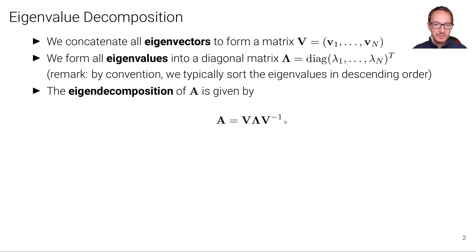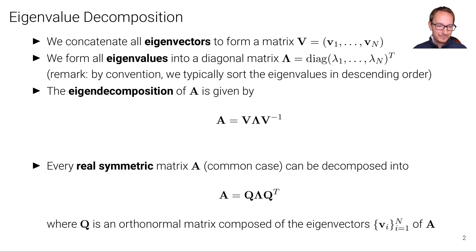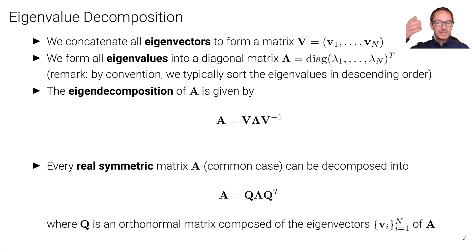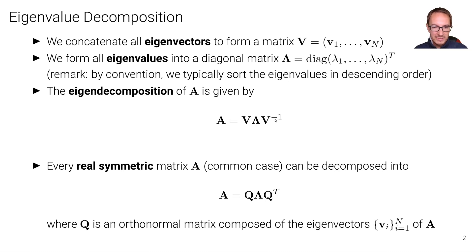It is guaranteed that every real square matrix has such an eigendecomposition. Furthermore, every real and symmetric matrix A — a very common case — can be decomposed into the simpler expression Q Lambda Q transpose, where we have a transpose instead of an inverse. This is because Q is an orthonormal matrix composed of the eigenvectors of A, with all columns being orthonormal to each other, which allows replacing the inverse with the transpose.